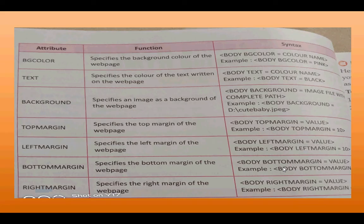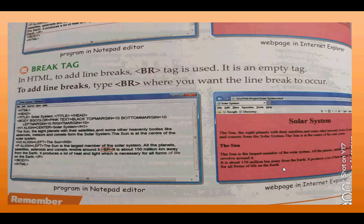Next, we did some attributes of the body tag. Attributes of the body tag are: bg color, text, background, top margin, left margin, bottom margin, and right margin. These are all attributes of the body tag, which are given with the body tag.